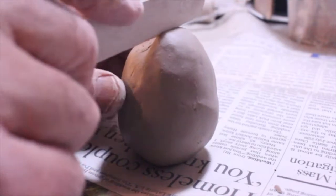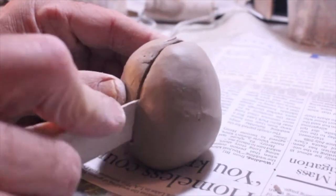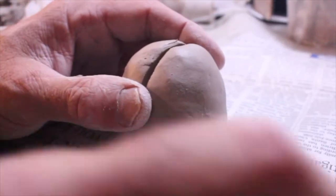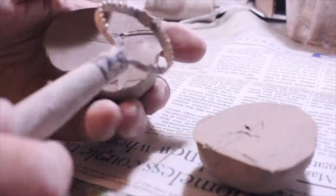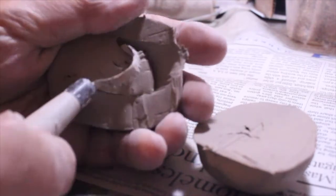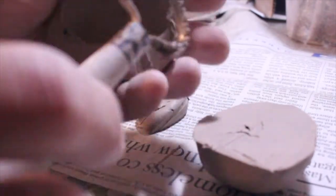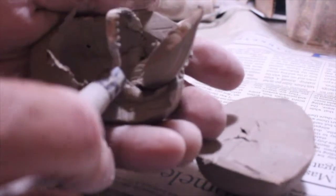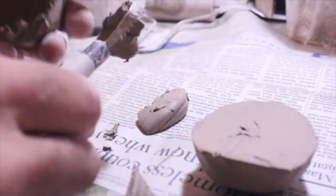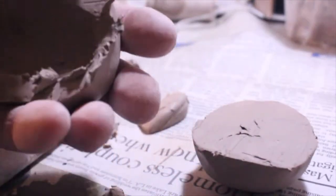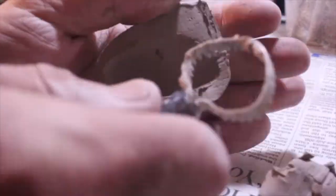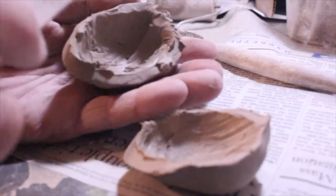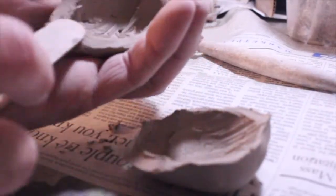Take your tool, your loop tool, and clean it out. You have to hollow this out, it must be hollowed out and you're being gentle, you don't destroy your egg. Smooth your edges out, smooth these edges.